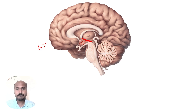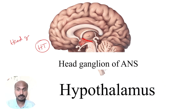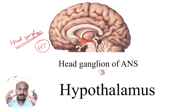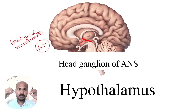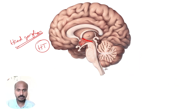The hypothalamus is known as the head ganglion of the sympathetic or autonomic system. This name was given by Sherrington. It is the head of all autonomic responses — that is the meaning of the term 'head ganglion.'